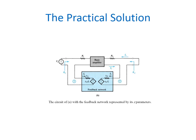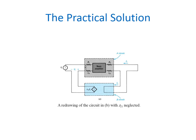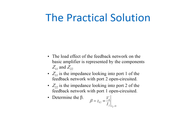Here the feedback network is represented by its Z parameter mark. In the circuit, we are going to neglect the parameter Z21 alone from the feedback network. So that the load effect of the feedback network on the basic amplifier is represented by the Z11 and Z22 parameter. Z11 is nothing but impedance looking from the port 1 of the feedback network by considering port 2 as open circuit.